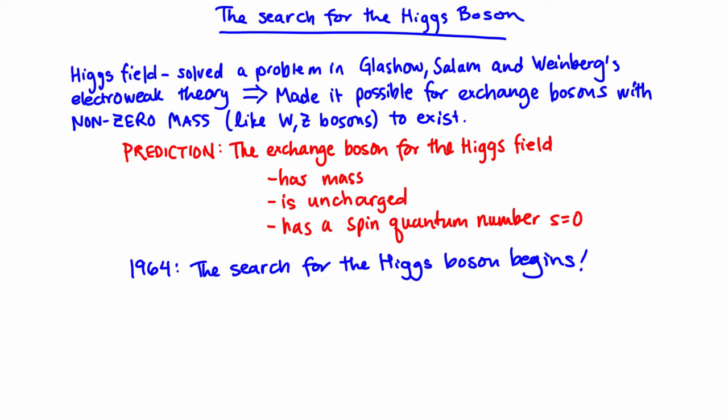This long experimental campaign actually spanned multiple decades and increasingly more ambitious experimental setups. For simplicity, we're going to talk about the latest search for the Higgs, which led to its discovery. This discovery won Peter Higgs and Francois Engelbert the Nobel Prize in 2013, and it was made possible using the Large Hadron Collider, otherwise known as the LHC, located at CERN in Europe.